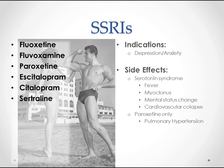Moving on to the SSRIs — the freaking fabulous pecs. So fluoxetine, fluvoxamine, paroxetine, escitalopram, citalopram, and sertraline. We use these basically for depression and anxiety as the main categories, though we use them for some other things as well. We don't really use them for pain like we do with some of the others.